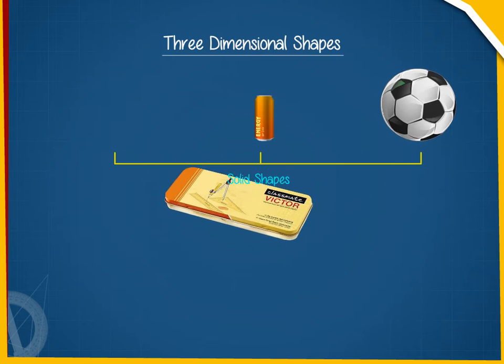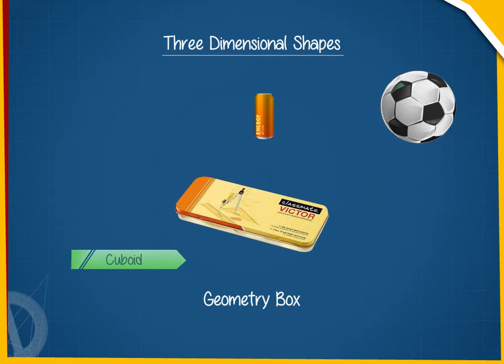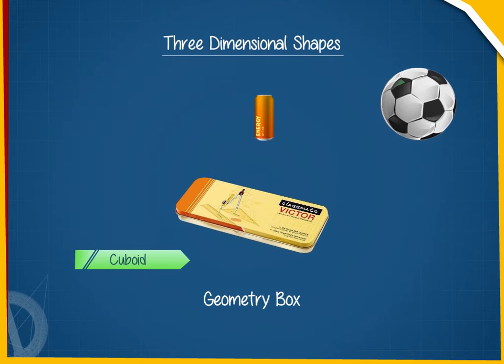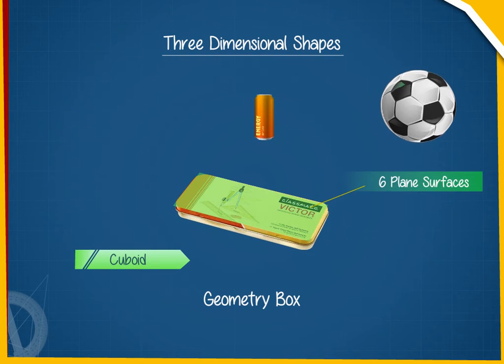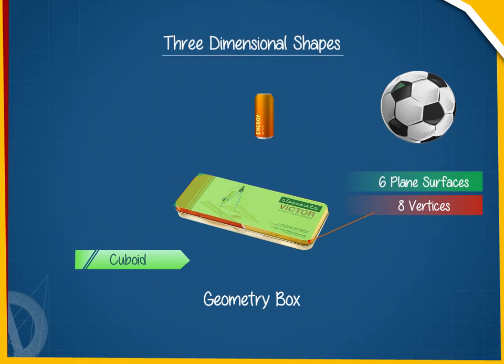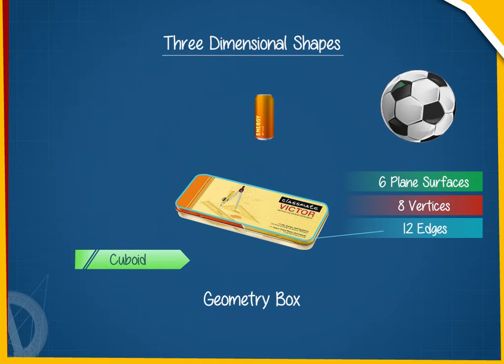A geometry box is a cuboid that has six plane surfaces, eight vertices and twelve edges.